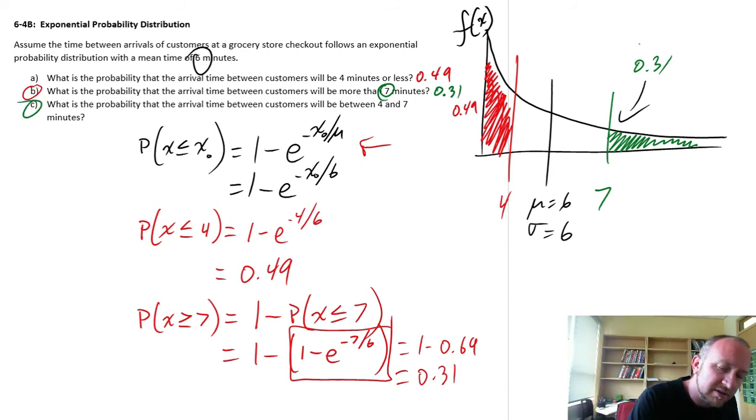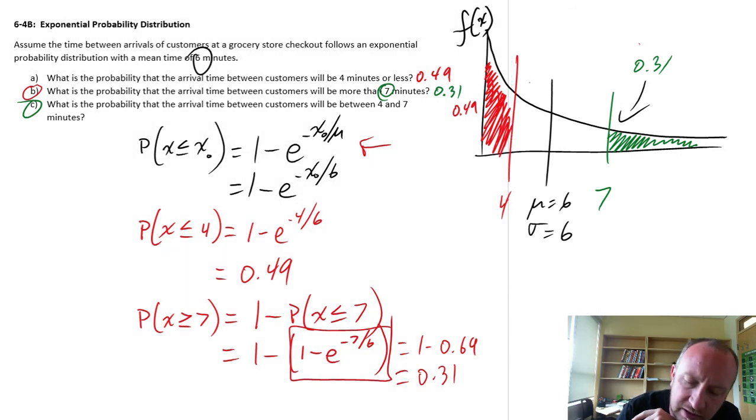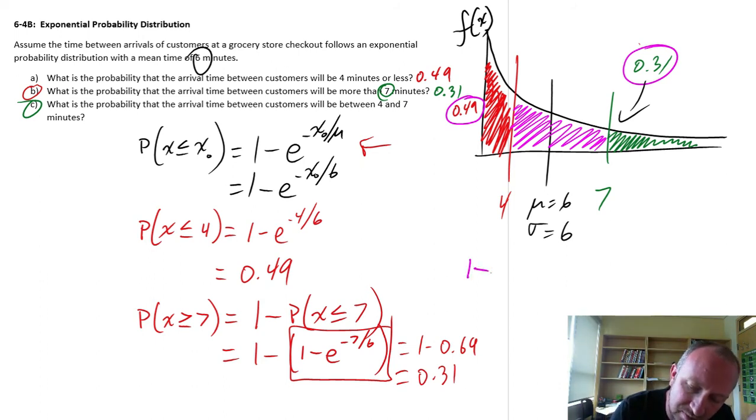Part C: What is the probability that the arrival time is between 4 and 7? Now I'm looking at our pink space. I want this region here. There's different ways that we can go about calculating this. Given that we already have this red area and this green area, this would actually be the easiest way to do it. The whole area, red plus pink plus green, that whole area is equal to 1. So if I take 1 minus the red area minus the green area, that will equal our pink area.